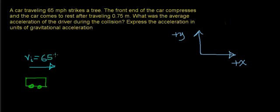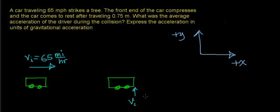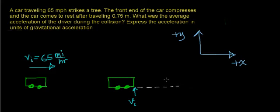This car is traveling at an initial velocity of 65 miles per hour. What happens is this car is going to start to make contact with the solid object, the tree or the wall. The car will still have an initial velocity of 65 miles per hour at this point. Then over a distance of 0.75 meters, the car is going to slow down until it eventually comes to a stop, so the final velocity is going to be 0 meters per second.